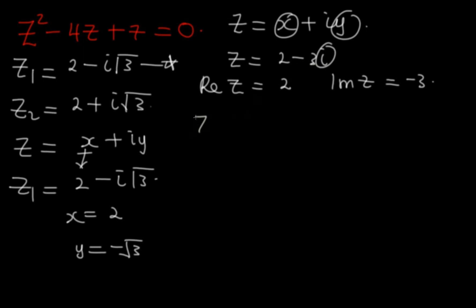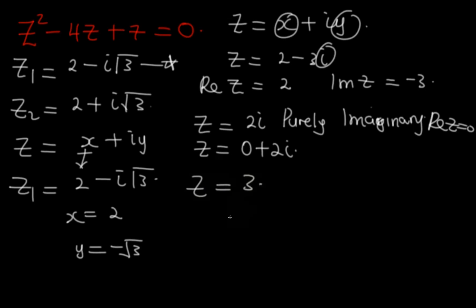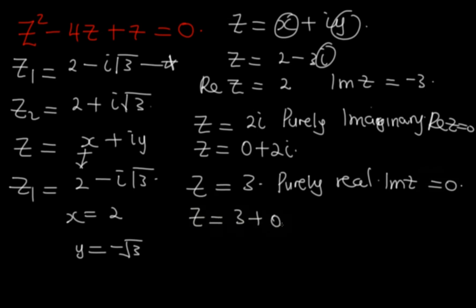If z = 2i, that means z is purely imaginary. The real part of z equals 0, so we can rewrite z as 0 + 2i. If z = 3, then z is purely real because the imaginary part of z equals 0, and we can rewrite z as 3 + 0i.